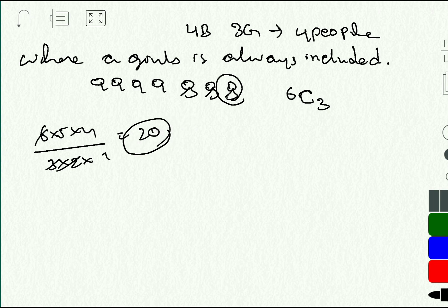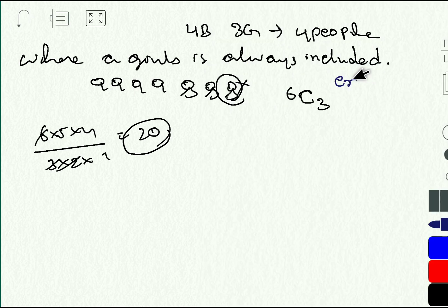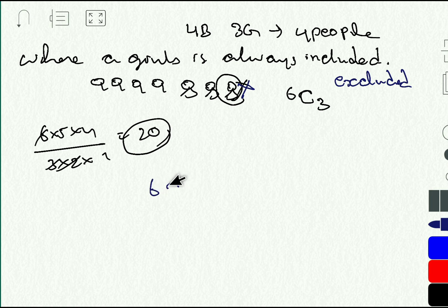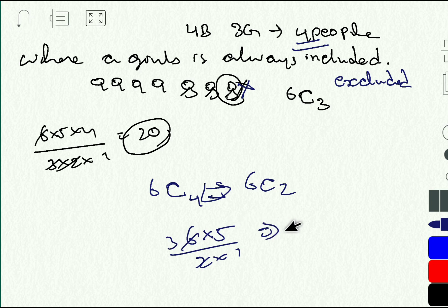Now imagine your manager says don't include this particular girl — where a particular girl is always excluded. Once again you are left with six people, but this time you must select all four people from them. So 6C4 ways. We know 6C4 = 6C2 = 6×5 / (2×1) = 15. So 15 such combinations are possible.